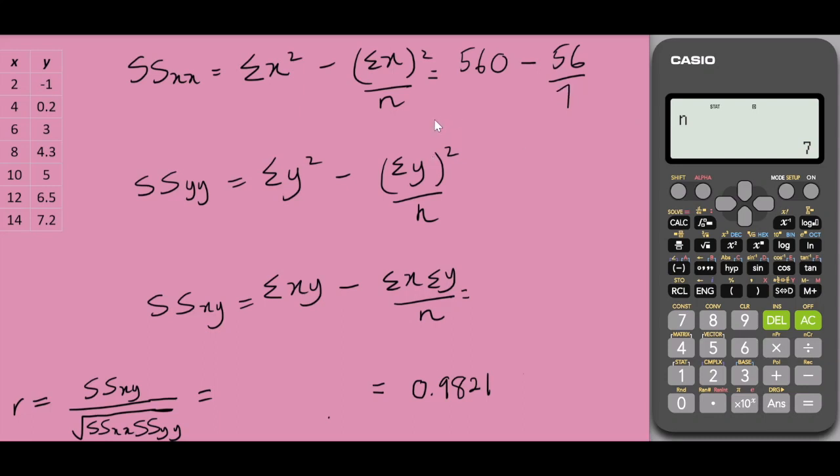We would calculate the sum of squares of xx in a short while. Shift 1 again, 3. I'm selecting 3 for the sum of y square which is 147.62 minus shift 1, select 3 again and sum of y, selecting 4 equals to would give me 25.2 square over 7.